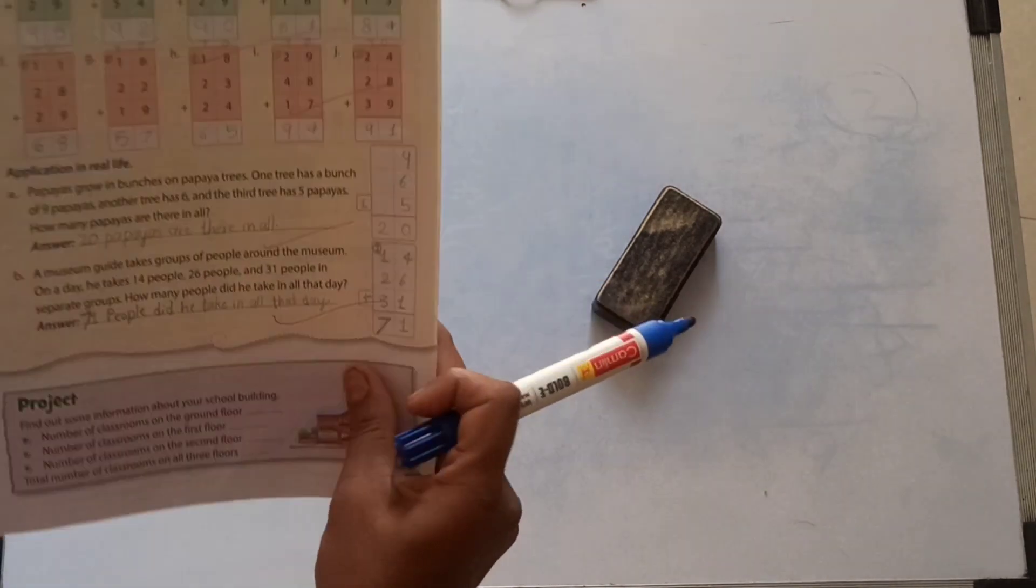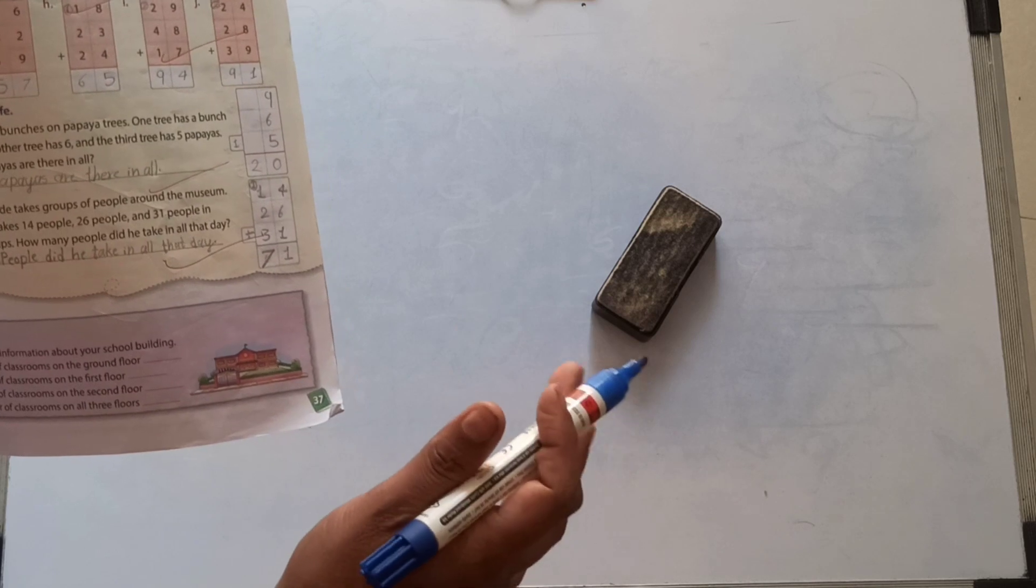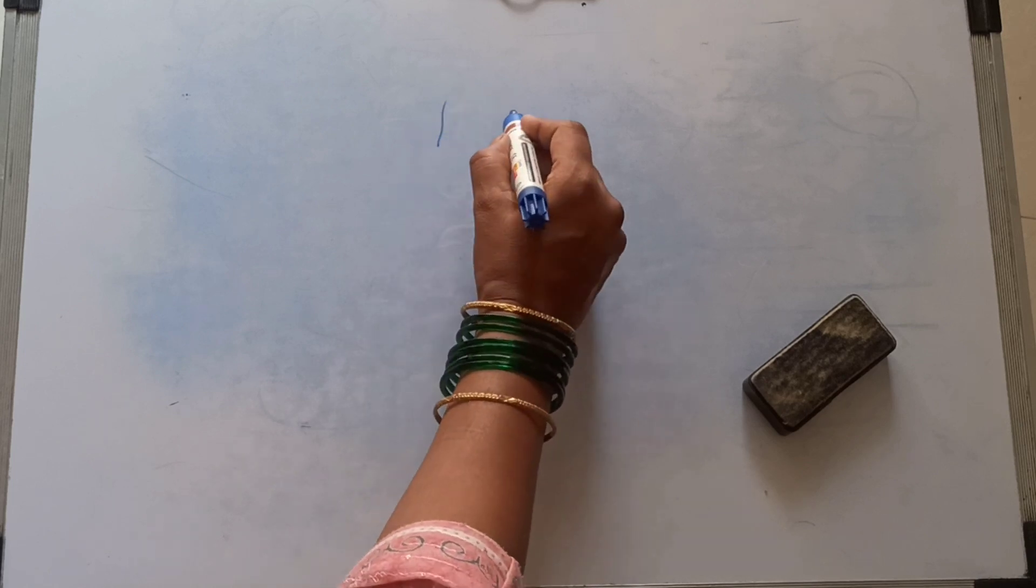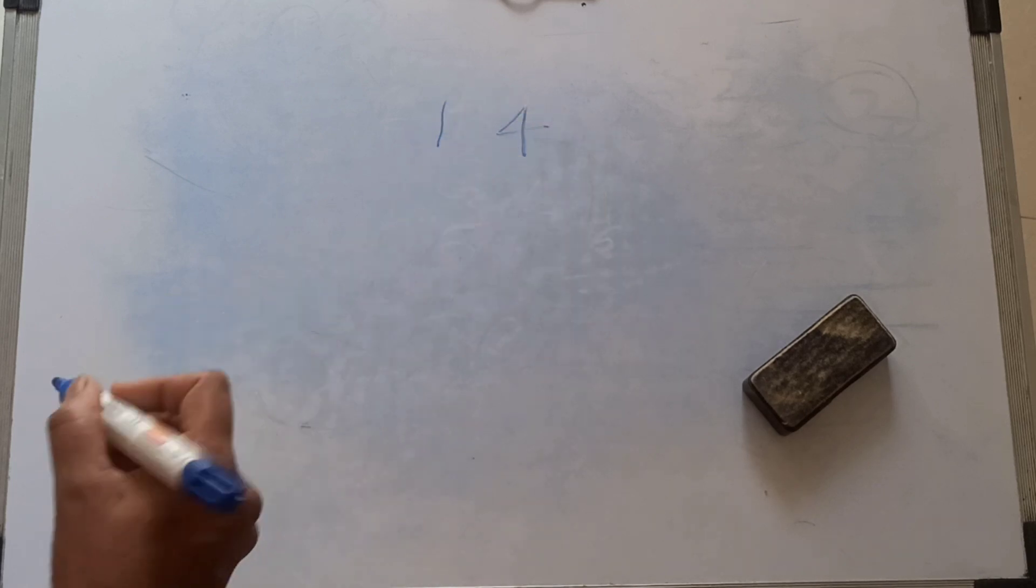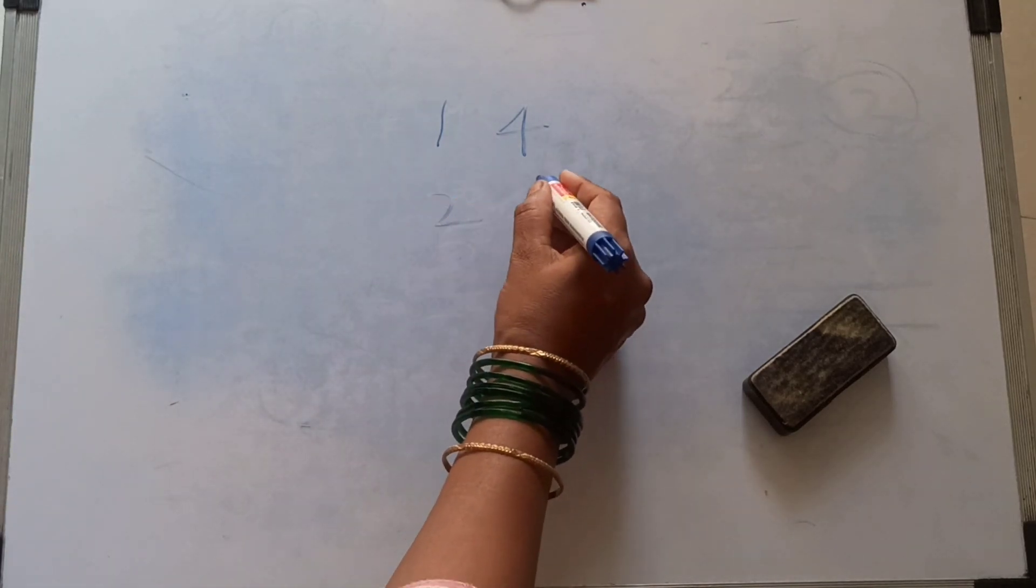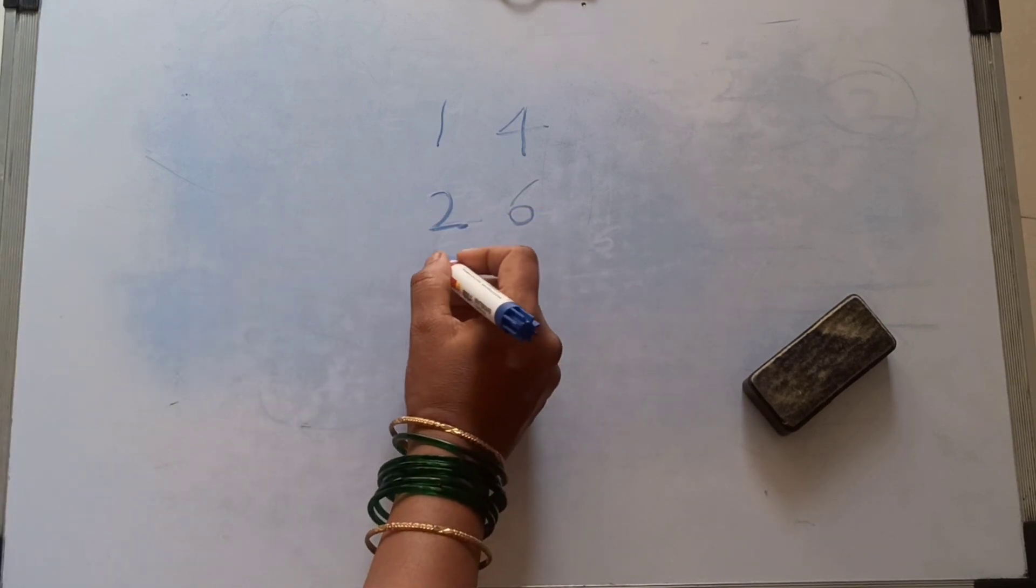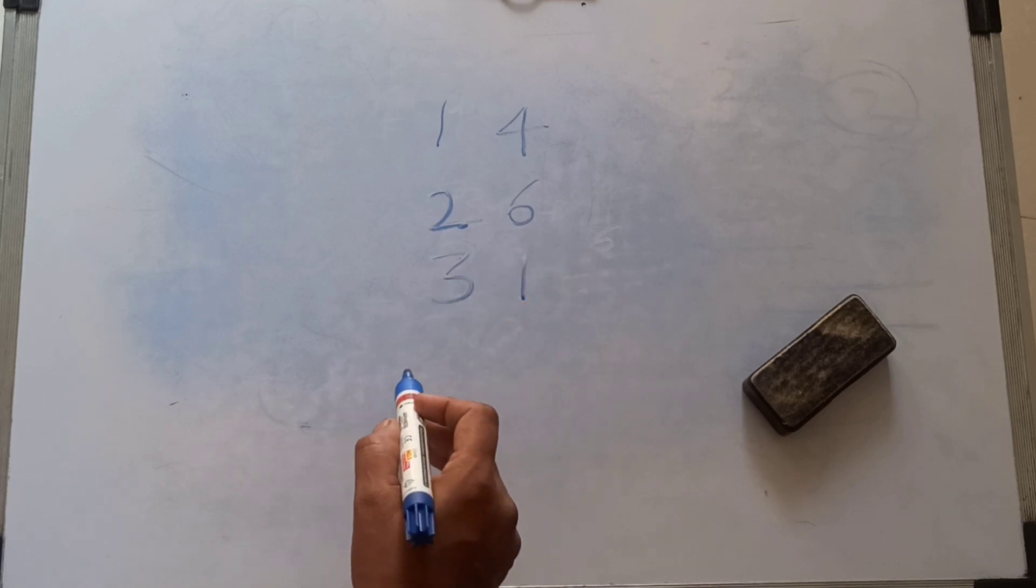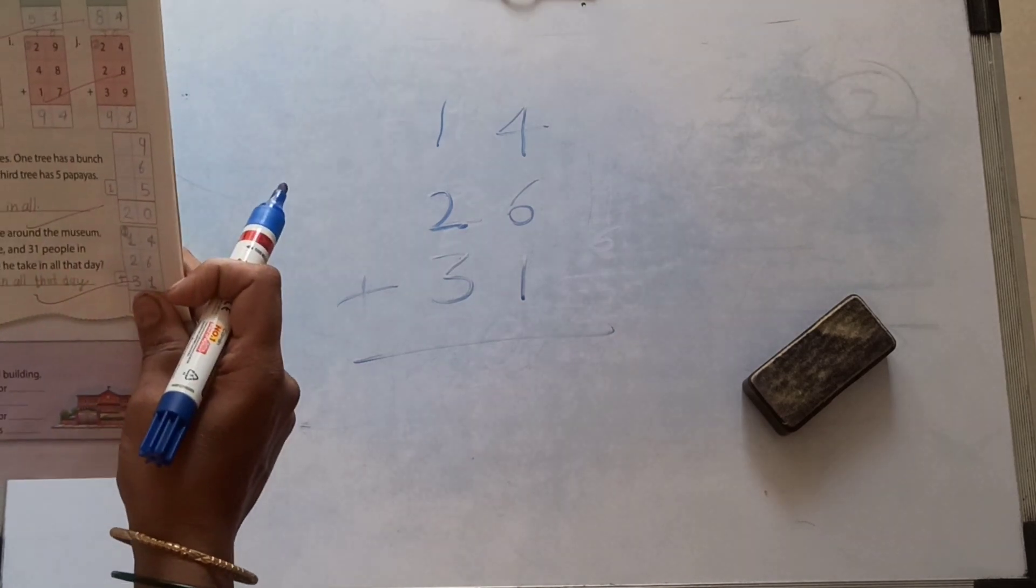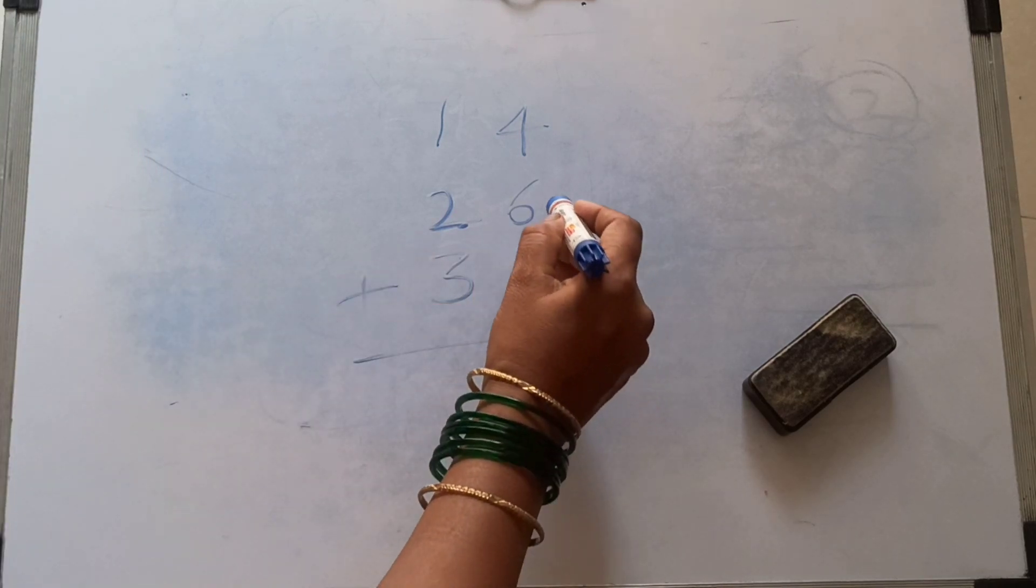Next: Museum guide takes groups of people around the museum. On the day he takes 14 people, 26 people, and 31 people in separate groups. How many people did he take in all that day?